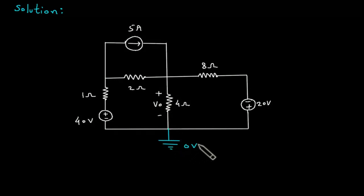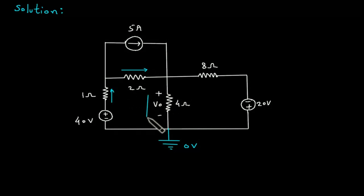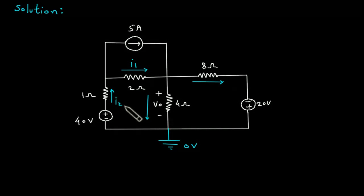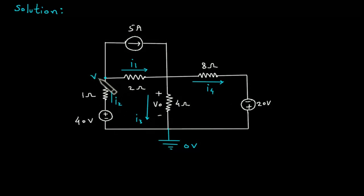We will assume this is the reference node with zero volts, and assume the direction of currents.